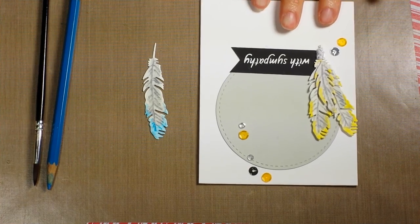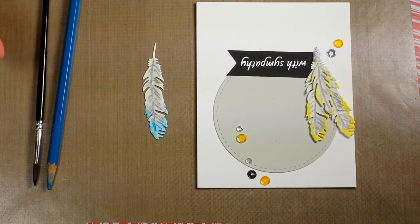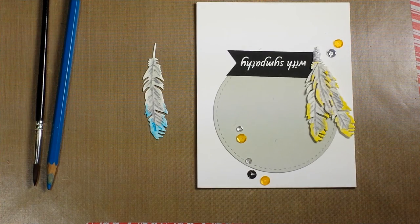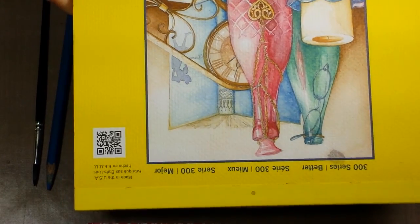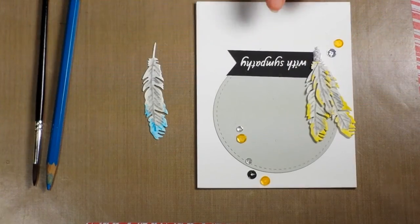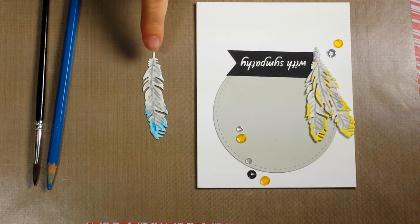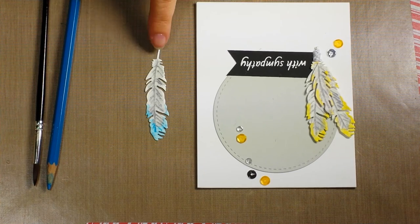Anyway, for the watercolor paper, I buy the big pad. Let me show you—this is what I buy. I buy a big pad and cut it down to card sizes, and whatever is left over, I have a little scrap pile. That's what I've been pulling to die-cut these feathers.